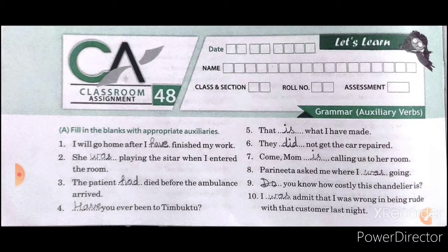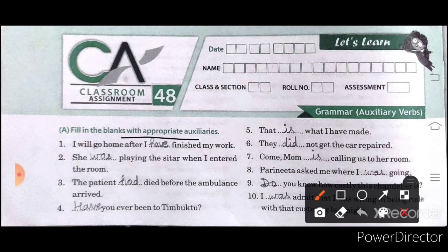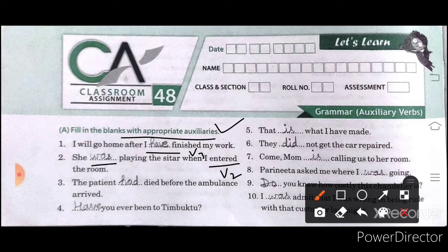Here is Exercise A. We have to fill in the blanks with appropriate auxiliaries. In the first sentence: I will go home after I have finished — verb third form is used here. In the second sentence: She was playing the sitar when I entered — verb second form, 'was playing'.